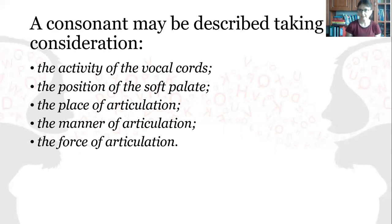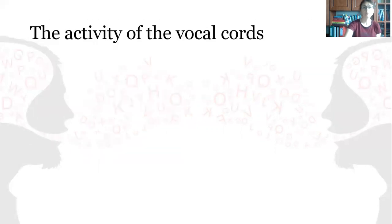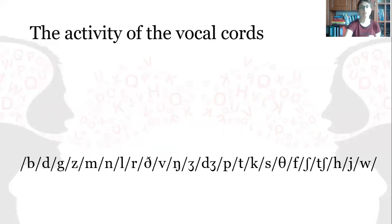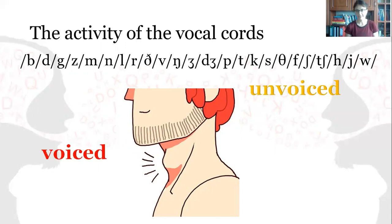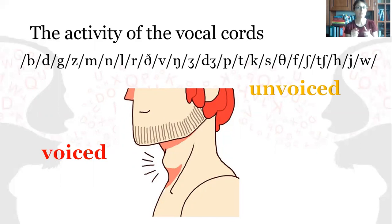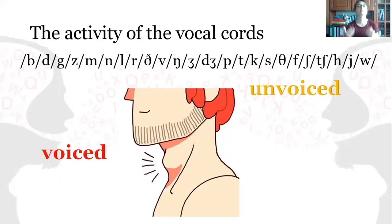We can have 40 or so consonant sounds. When it comes to the activity of the vocal cords, here we have a picture. We can ourselves understand whether a consonant is voiced or unvoiced — by the way, unvoiced is also called voiceless — by simply putting our hand here and pronouncing the sound.